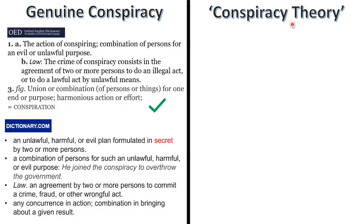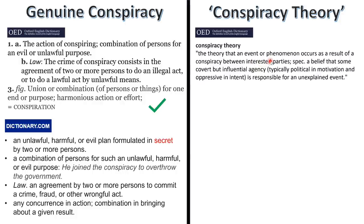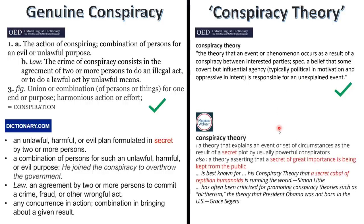What about 'conspiracy theory'? Oxford are actually quite good: 'the theory that an event or phenomenon occurs as a result of a conspiracy between interested parties; specifically a belief that some covert but influential agency, typically political, oppressive in intent, is responsible for an unexplained event or current scenario.' I like it, it's fair. But definitions elsewhere are much more manipulative — you'll see the word 'secret' of great importance, and Merriam-Webster's example is 'a secret cabal of reptilian humanoids.' Conspiracy theory is a weaponized phrase, mostly used to discredit or shut down conversation, even on valid concerns.